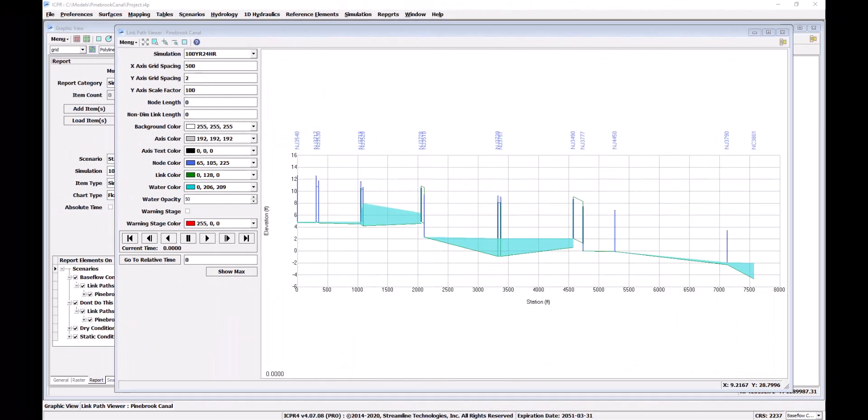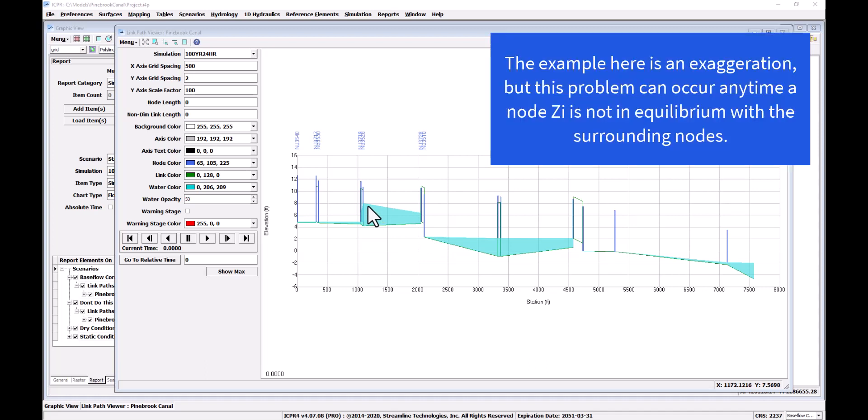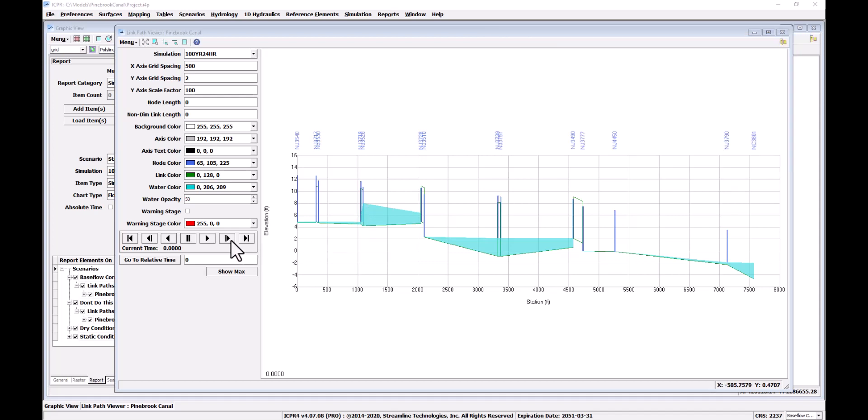In this scenario, most of the nodes are properly set at controlling elevations to implement a static condition. However, the link profile shows us that the initial stage is too high at this location. This initial stage should be corrected, otherwise there will be a large slug of water flowing through the network at the onset of the simulation.